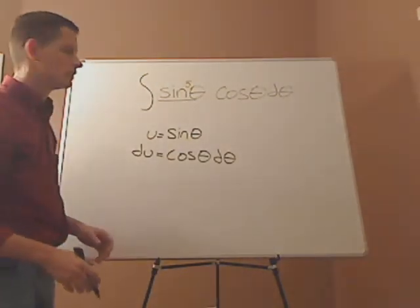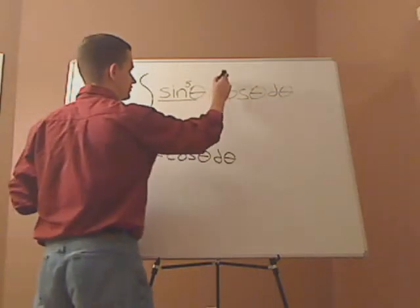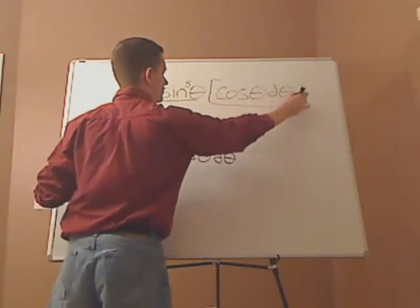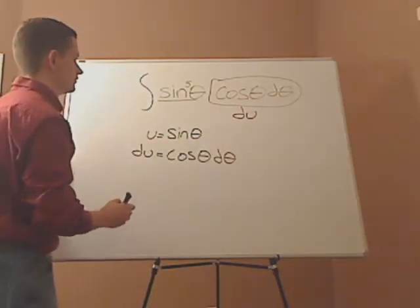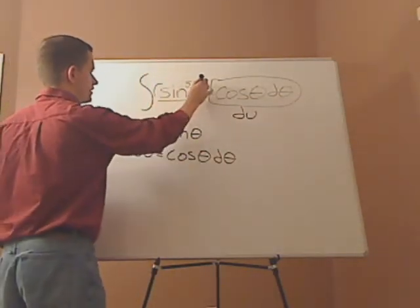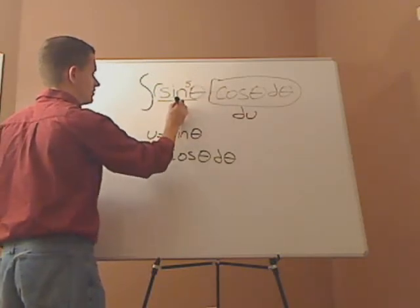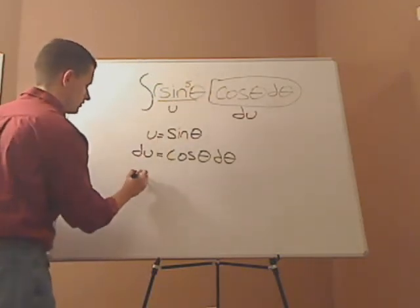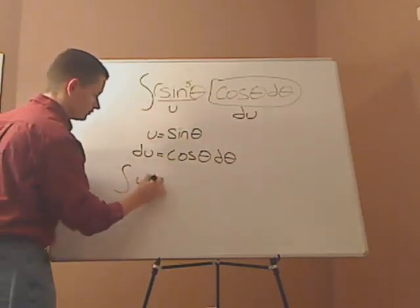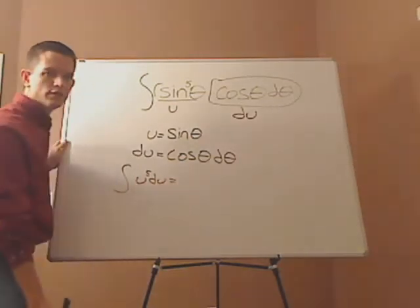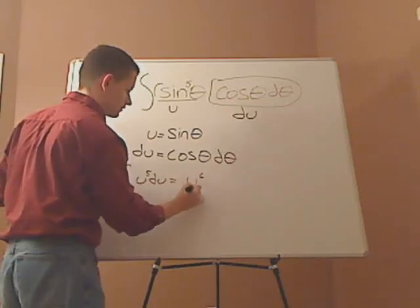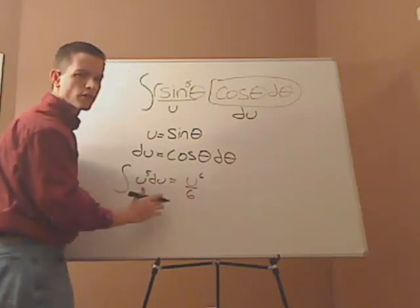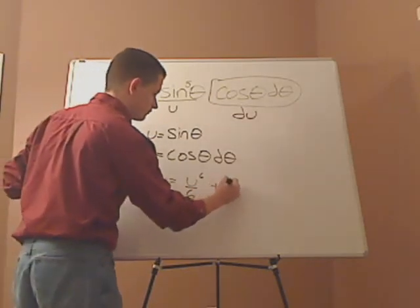This is totally up to you. I'm just going to replace it. So this right here is my du. This right here, just the sine theta, is going to be my u. So my integral is going to be u raised to the fifth power du. And when I do that, I get u to the sixth over sixth — I'm just applying the power rule — plus c.